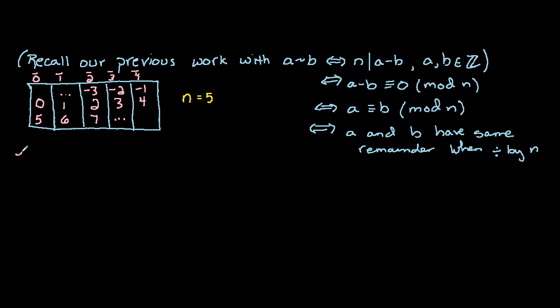Let's take a look at an example. We could say things like the following: 18 is congruent to negative 57 mod 5. And we could come up with many other examples as well.